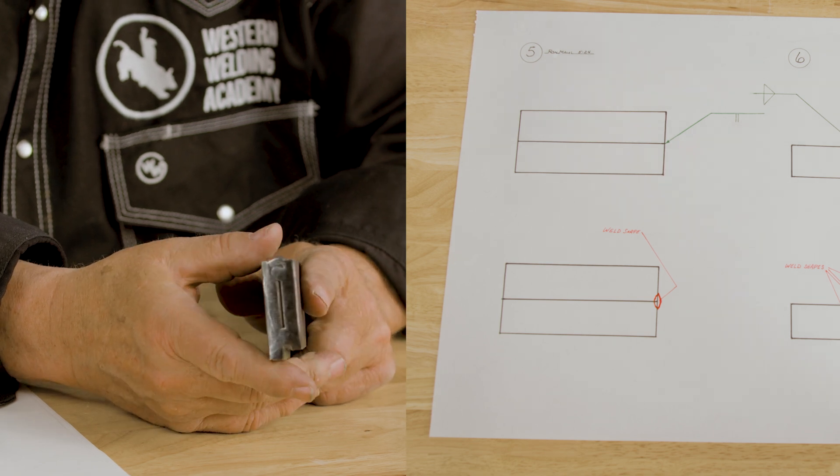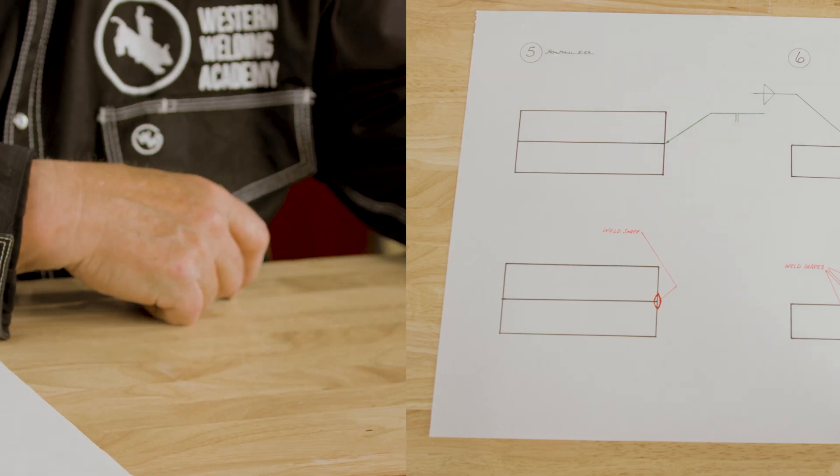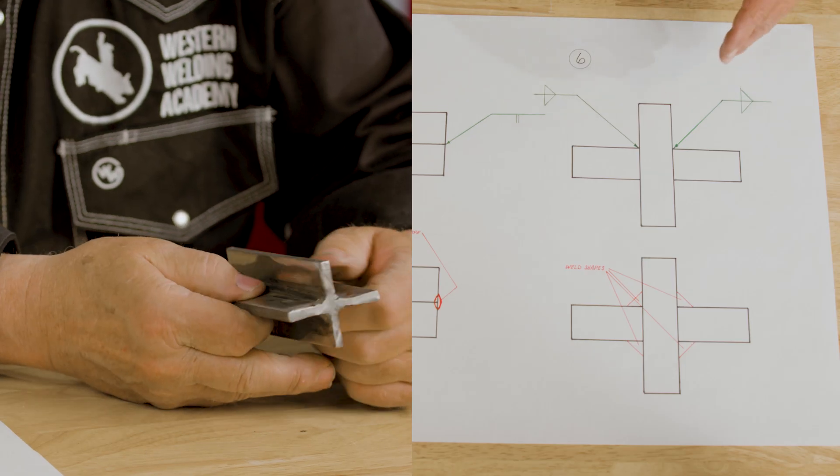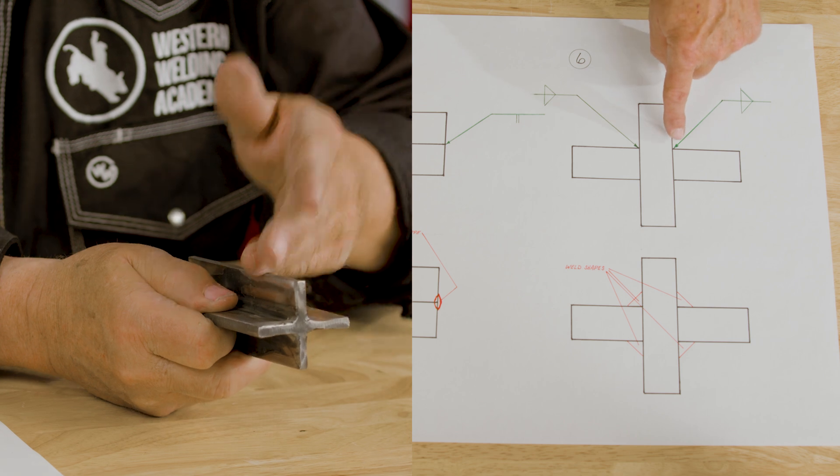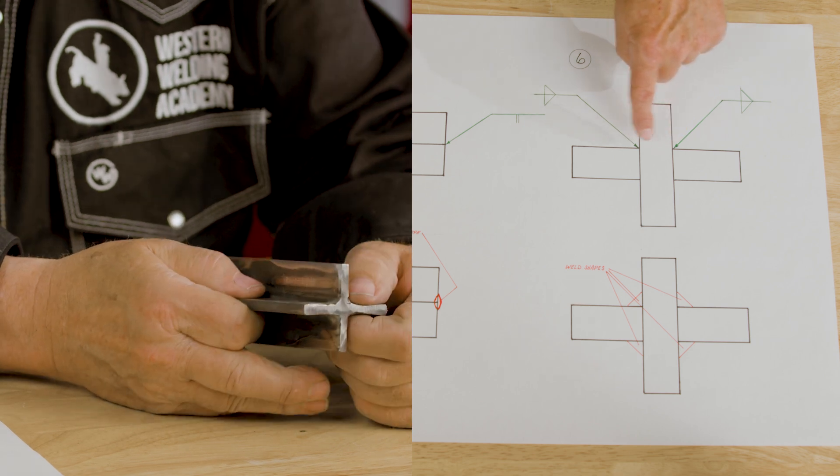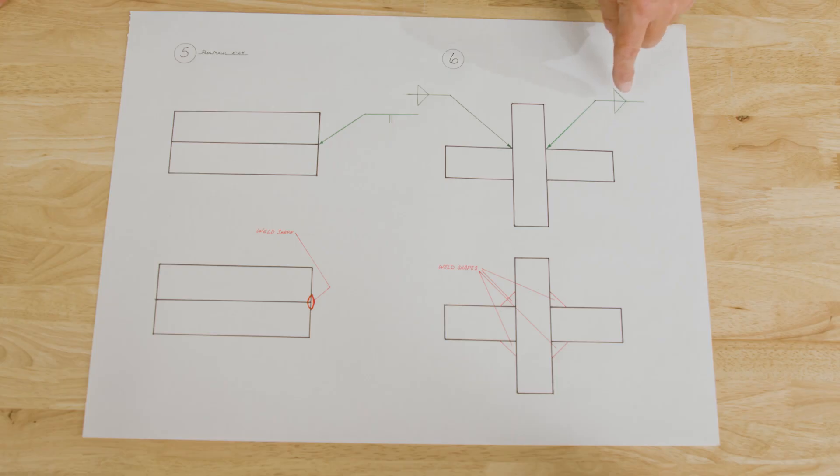These symbols can be a lot like hieroglyphics. If you don't know what you're looking at, you can't tell what it is. Okay, number six is four fillets. When you're talking arrow side and other side, you don't go through a full piece of plate. You go through the joints. So this is arrow side.